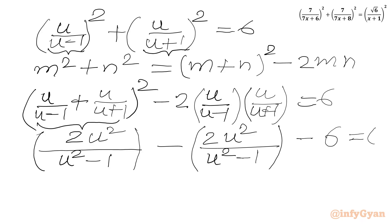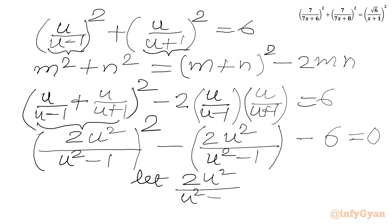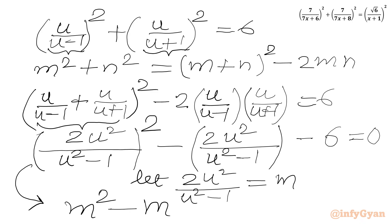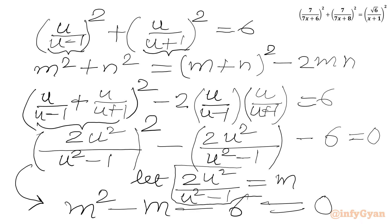This is a quadratic equation. Let us assume 2u²/(u²−1) equal to m. We can get a quadratic in m: m² − m − 6 equal to 0. Remember, m is 2u²/(u²−1).